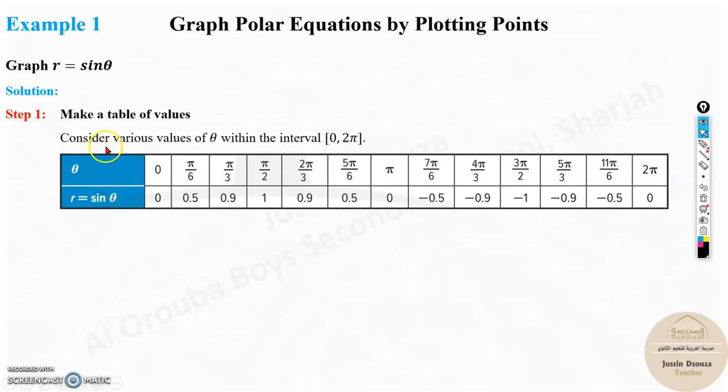If you're getting confused with the radian degree and all that, forget it. Just use degrees. Simple as that. Instead of taking the radians, just have degrees: 0, 30 degrees, 60, 90, 120, 150, 180, and so on. No need of taking these radians.